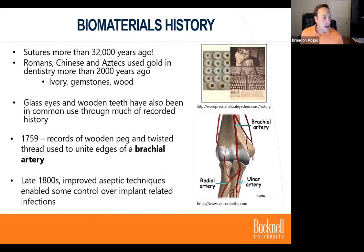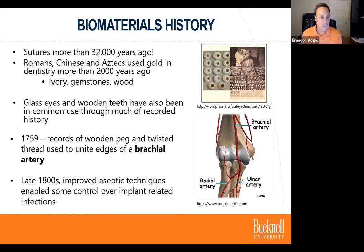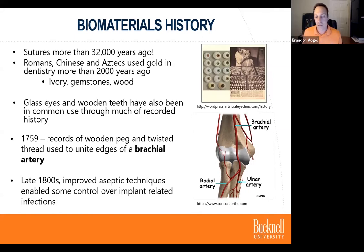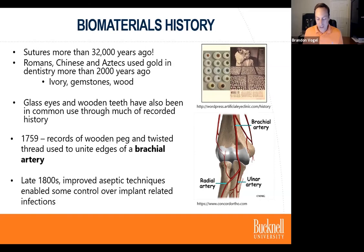A little history of biomaterials: sutures have been around for more than 32,000 years. The Romans, Chinese, and Aztecs used gold in dentistry more than 2,000 years ago. Things like ivory, gemstones, and wood — if you break a tooth, you need to put something in there to continue eating. Glasses and wooden teeth have also been around for much of recorded history. In 1759, a woman was fitted for a glass eye with all the different options available at the time. There are records of wooden peg and twisted thread used to unite the edges of the brachial artery — and at this time, there's no pain medication and no understanding of aseptic technique, so over 50% of people died just from bacterial infections.